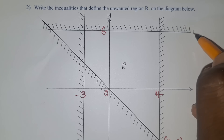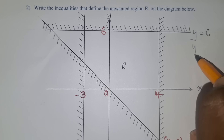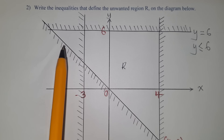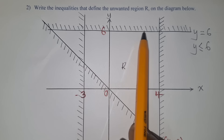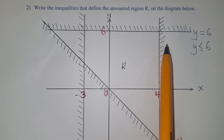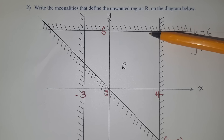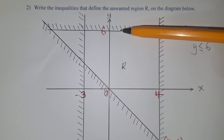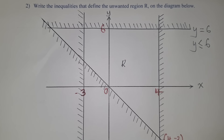The next inequality is y = 6. The line crosses the y-axis at 6. The bottom is less and the top is greater; the unshaded region is below, so the inequality is y ≤ 6.